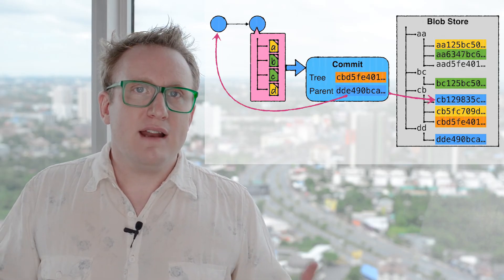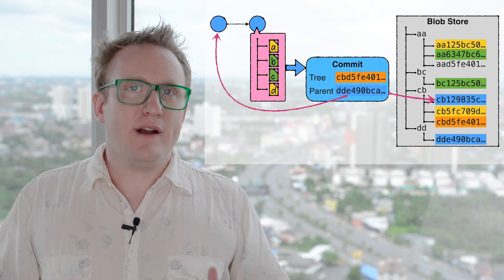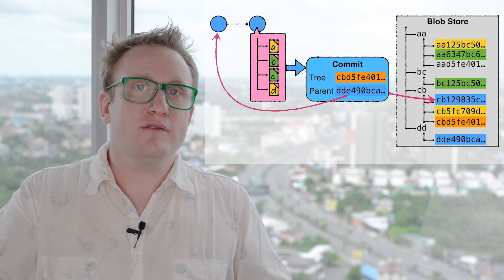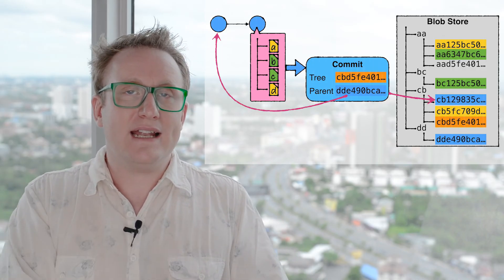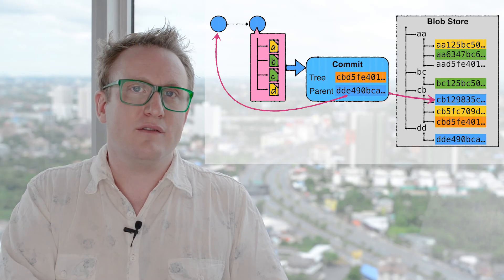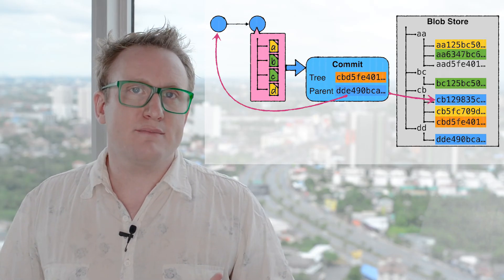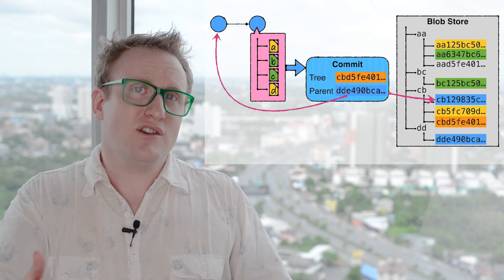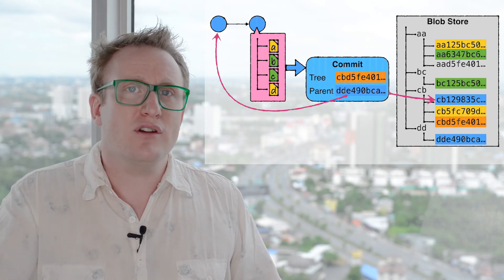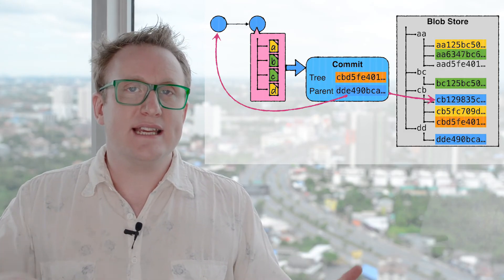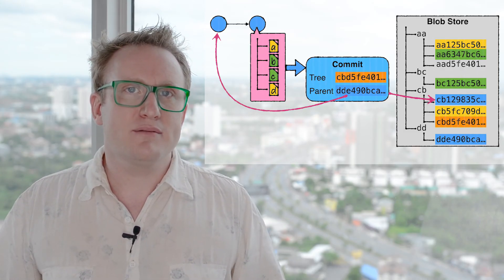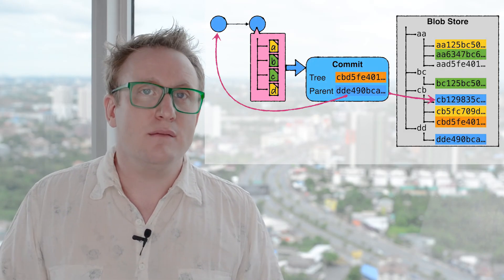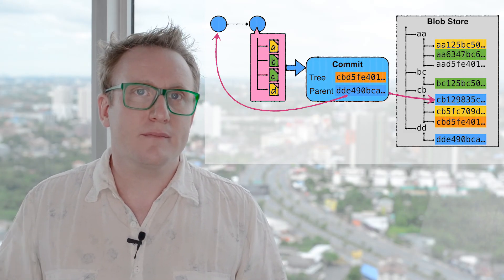So now every aspect of the commit — the files, the tree, and the commit itself — are all in this blob store. And those hashes that you see whenever you're using Git, they're just the keys used in the blob store, because everything is in the blob store.